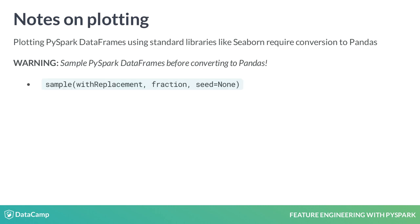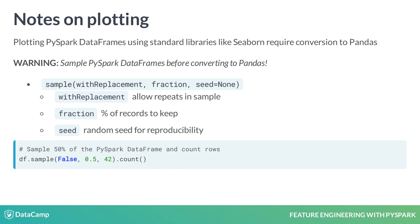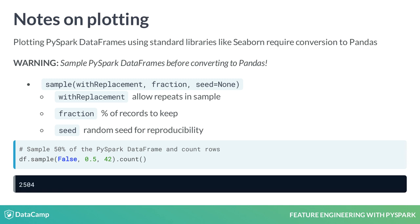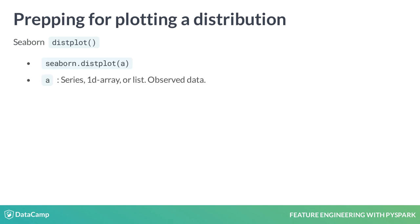The sample function can help us get a smaller data set to plot. Here we will keep sampling with replacement off, take 50% of the data, and set a random seed for reproducibility. Using count shows us the number of records has changed. We will leverage Seaborn's Displot, which will show us the distribution of our dependent variable, SalesClosePrice.